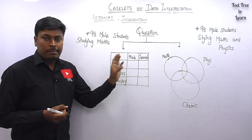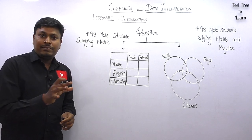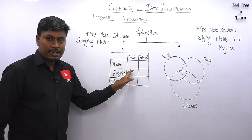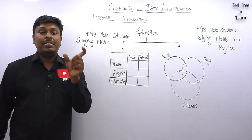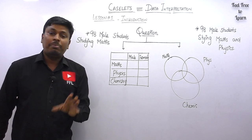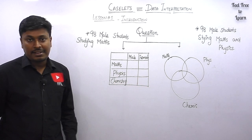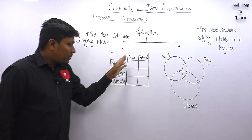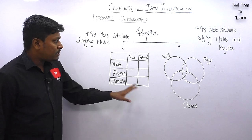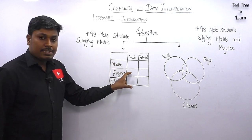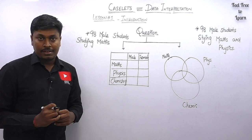Now, here are two important notes on caselet. If you know this concept clearly, you can solve any caselet question. By reading a question itself, you should decide whether to draw a table chart or a Venn diagram. This is where most students — even some experts — make mistakes: drawing a Venn diagram when a table chart is needed, or vice versa, and not getting the correct answer.